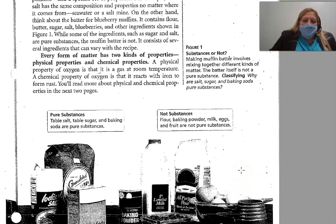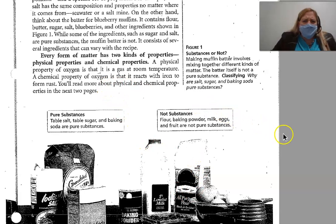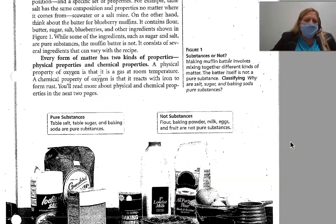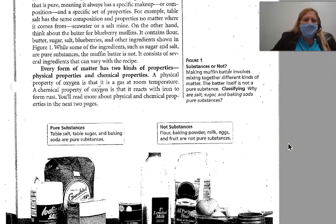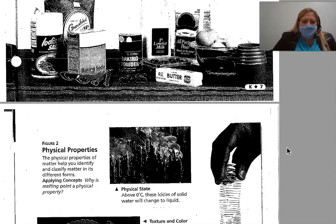Every form of matter has two kinds of properties: physical and chemical properties. A physical property of oxygen is that it is a gas at room temperature. A chemical property of oxygen is that it reacts with iron to form rust. You will learn more about physical and chemical properties in the next two pages.